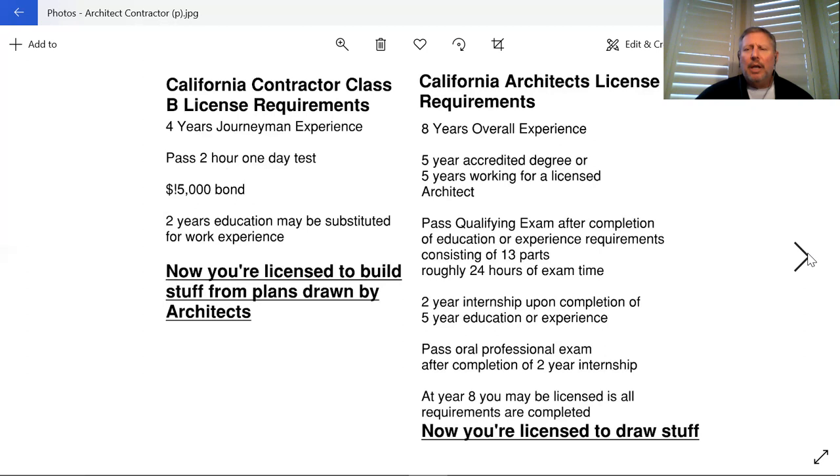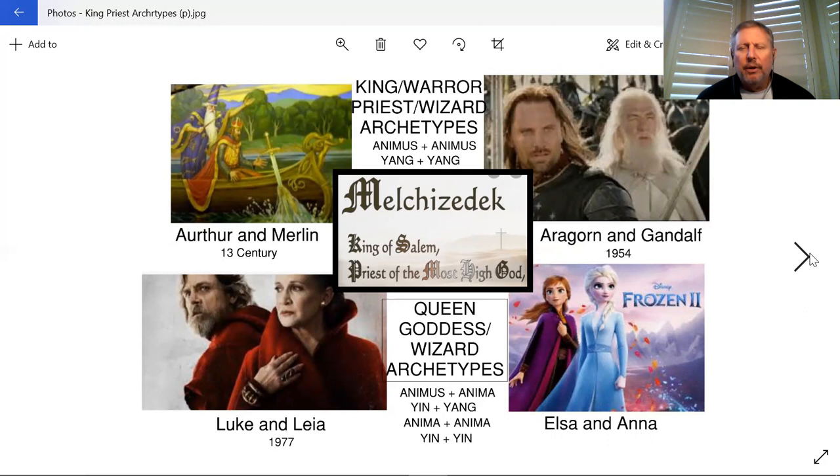As we discuss this architect-contractor concept, I'd like to talk about an archetype that's been around for quite a while. That is really the archetype of what we'd call the king-priest or king-wizard in Jungian terms. That probably started earlier, but I'd like to discuss the idea of Melchizedek from the Bible.